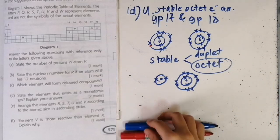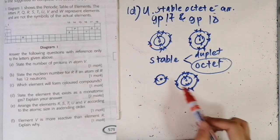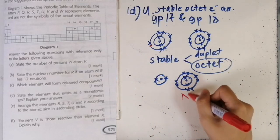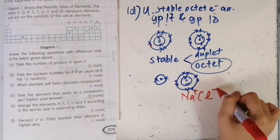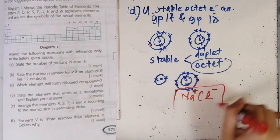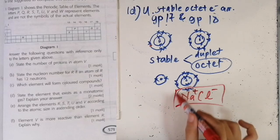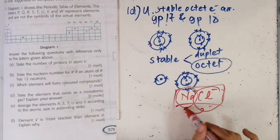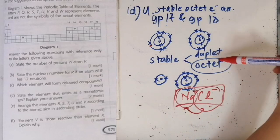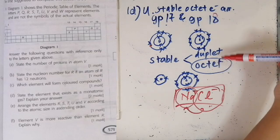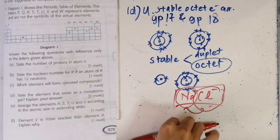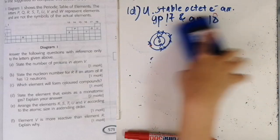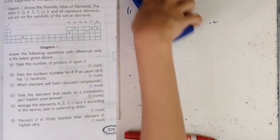Group 18 consists of inert gases, and they are inert because they have a stable octet electron arrangement. They do not need to share or donate electrons with other elements because they are already stable on their own. This is unlike, for example, Na⁺ and Cl⁻, which are not stable alone and must combine to become stable. Since group 18 elements are stable alone with their octet arrangement, they form monoatomic gas.